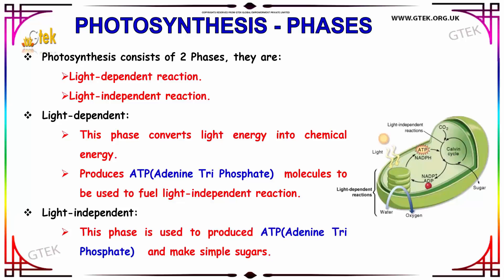Whereas in the light-independent reaction, the phase uses ATP — that is adenosine triphosphate — and it makes simple sugars. You can see the light-dependent reaction carried out here in the presence of light, which is absorbed by chlorophyll, and it converts chemical energy by using ATP.